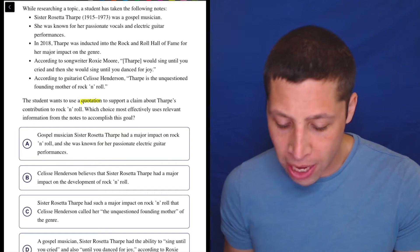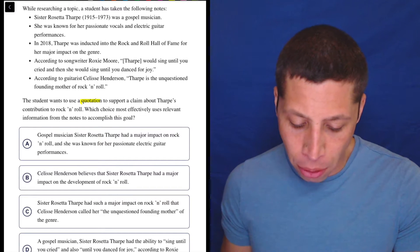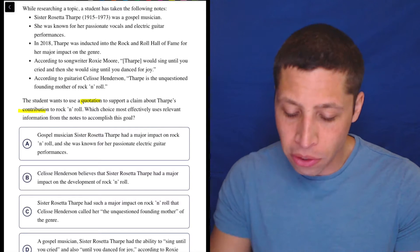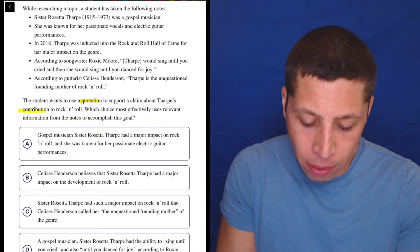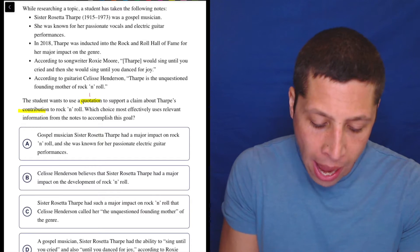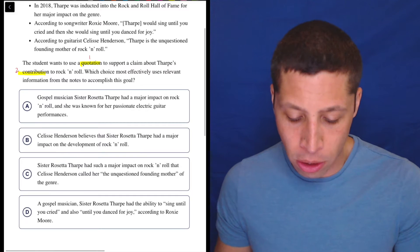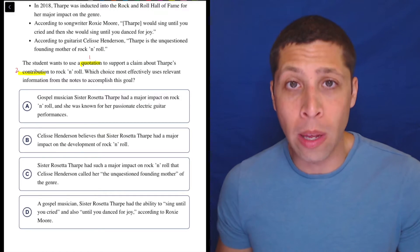In this case, the student wants to use a quotation to support a claim about Tharp's contribution to rock and roll. So there's almost like two goals here: it's got to be a quotation, and goal number two is it's got to relate to her contribution to rock and roll. Let's see what we can do thinking about it as two unique things we want.